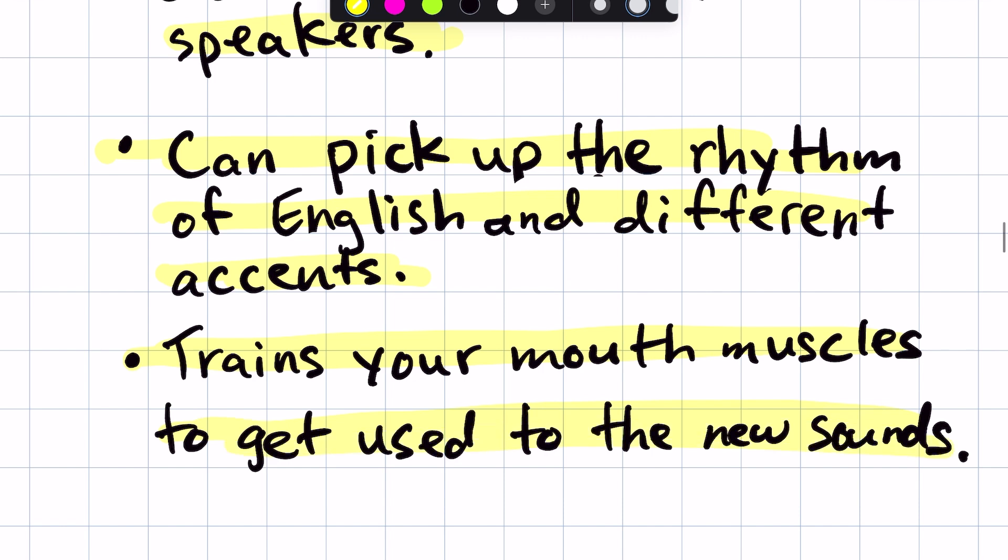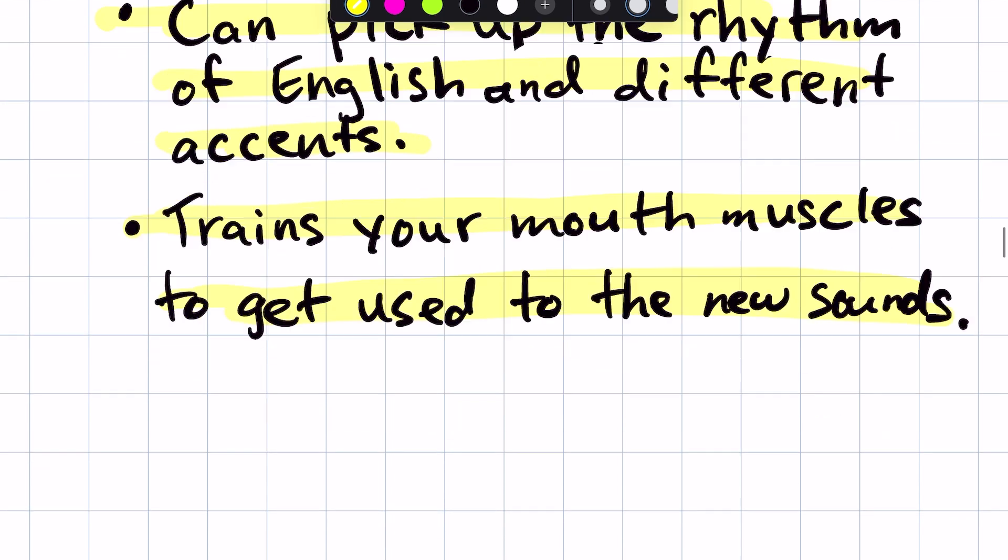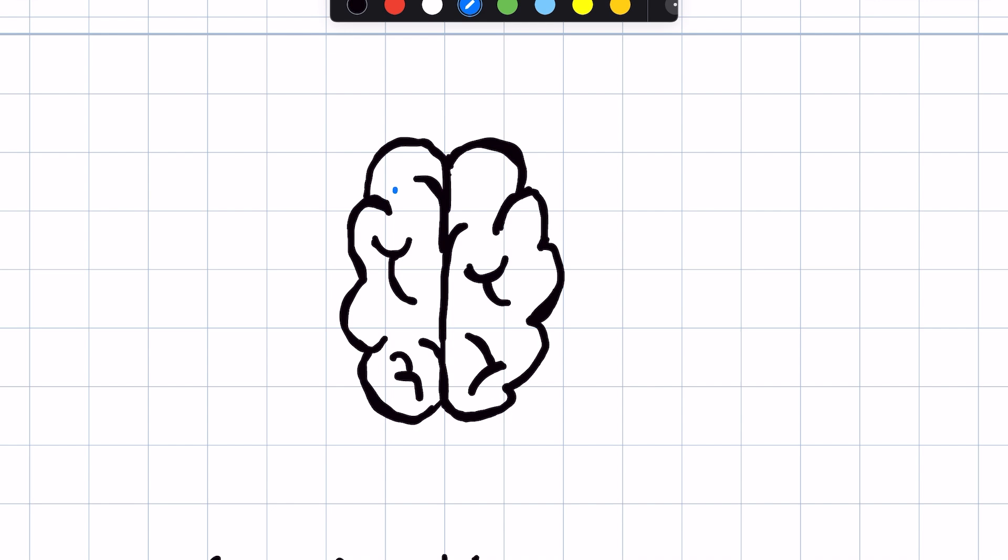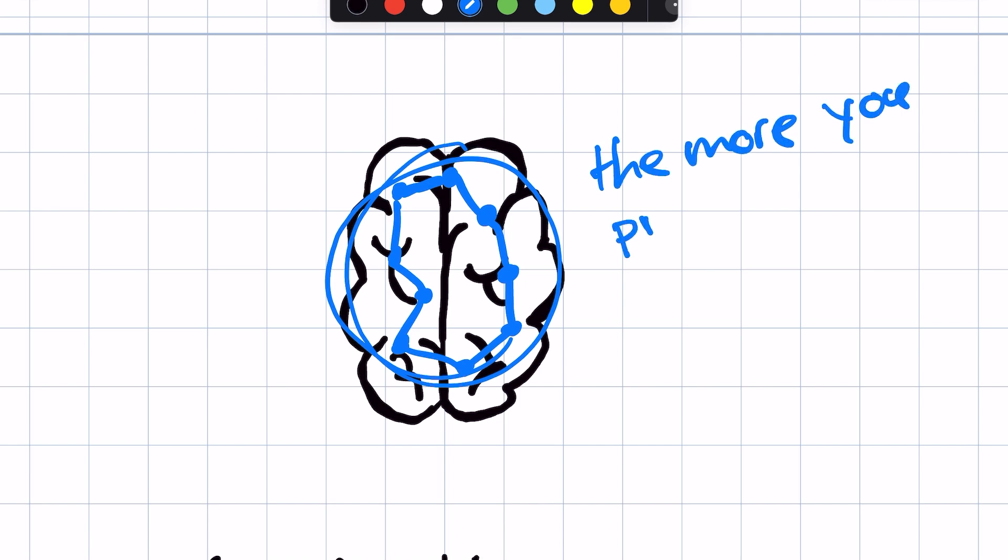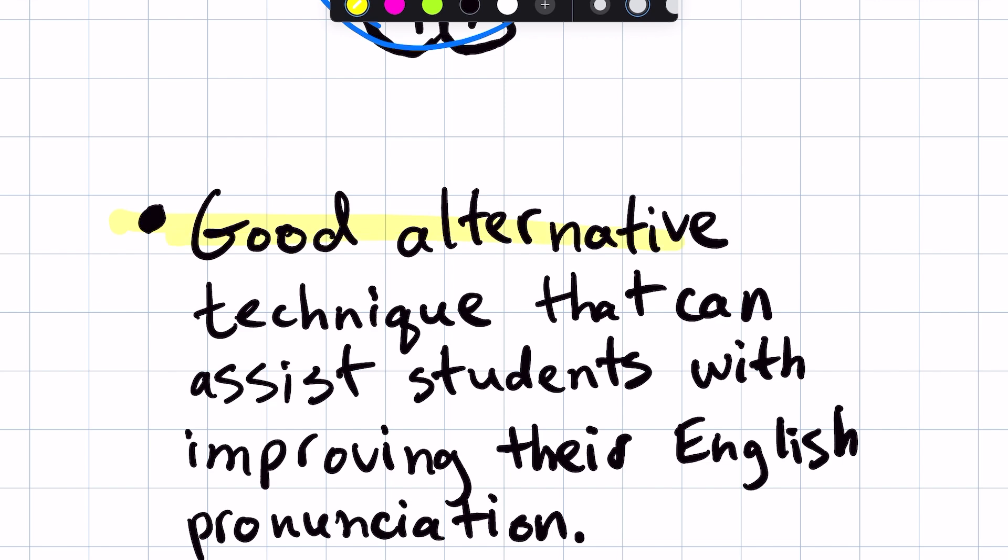So as we talked about earlier, this is all very key in improving your pronunciation. And so what shadowing does is that it basically forms new connections in your brain. And these connections are important because anytime you learn something new, whether it be language or new skill, your brain is always going to form these connections. And the more you practice, the stronger these connections get.